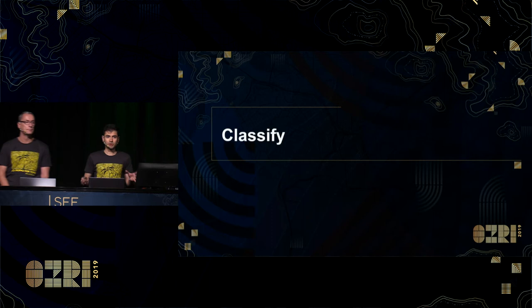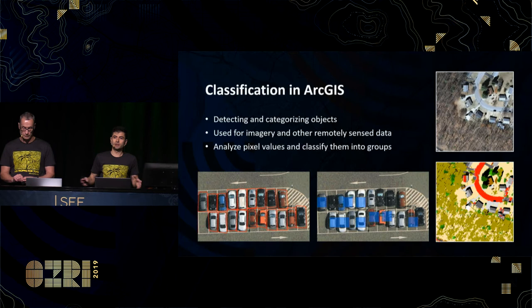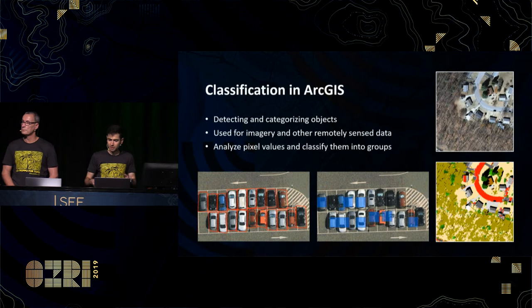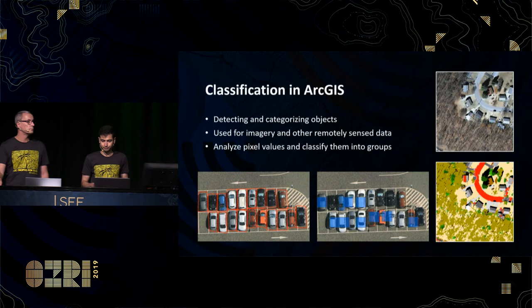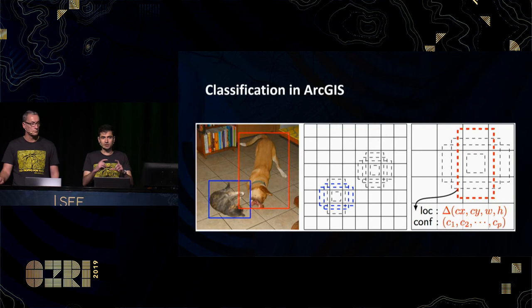Let's talk about a totally different concept: classification. The concept of classification is all about detecting objects and then deciding which category they should belong to. Classification is most commonly used when analyzing imagery or other remotely sensed GIS data. Examples include identifying areas of forest loss, assessing vegetation health, or determining which buildings were damaged after a natural disaster. One technique used in classification of imagery is called the Single Shot Detector, or SSD. This method maps out each image using a grid and then tries to fit bounding boxes of different shapes, sizes, and zoom levels around the grid in order to detect objects.